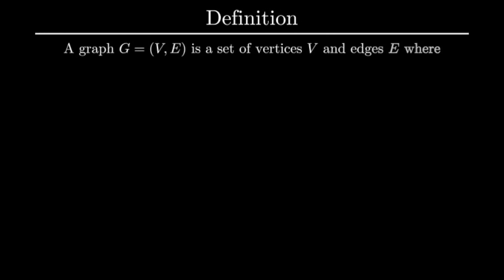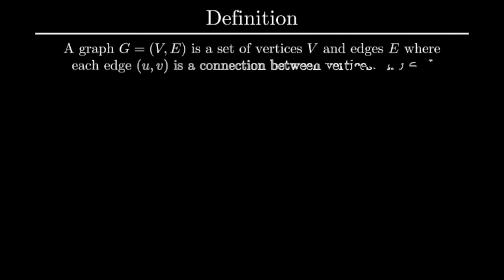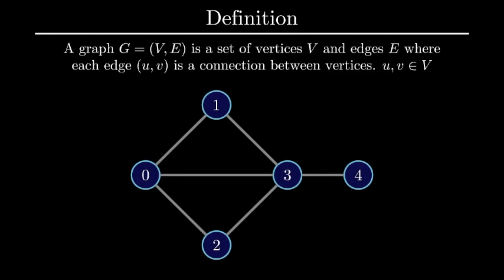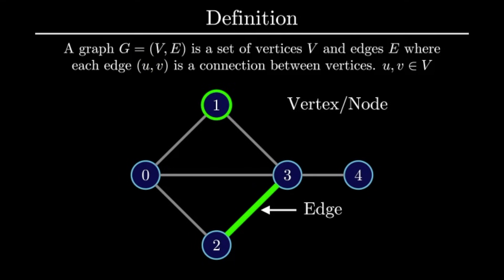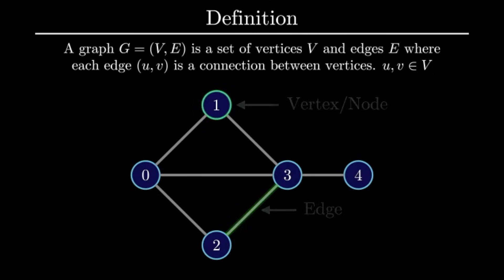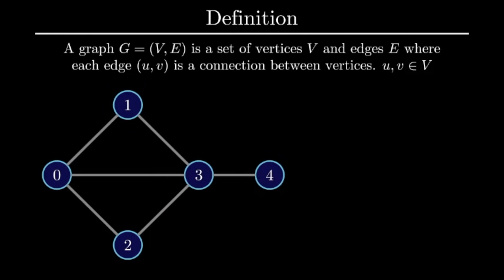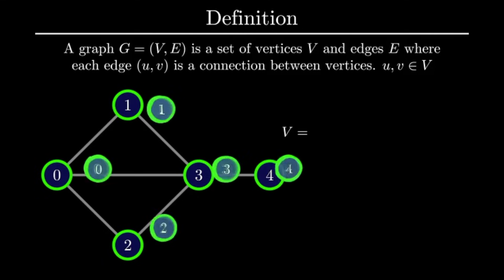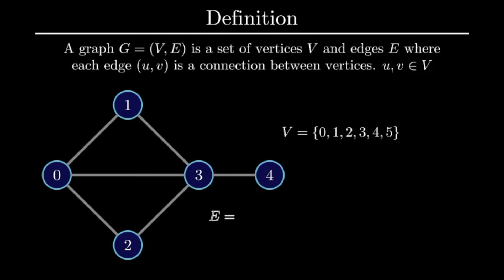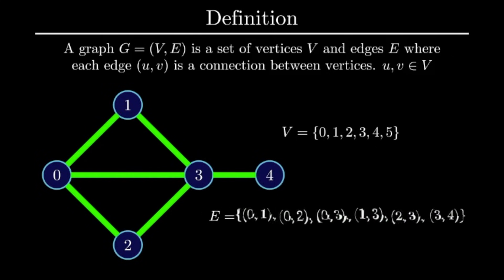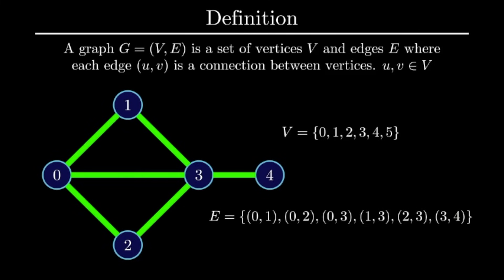Let's now proceed to formally define a graph. A graph is a set of vertices and edges where each edge is a connection between vertices. The way we usually denote an edge in a graph is by referring to it as a pair of vertices. Vertices and nodes are just different names for the same concept that we will use interchangeably when discussing graphs. If you are forced to mathematically write down a definition of a graph, we can use set notation. For this particular graph, the vertex set looks like this, and our set of edges would be denoted with this notation.